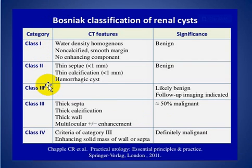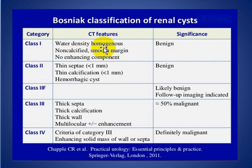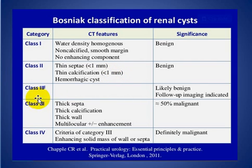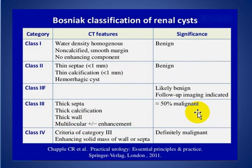To summarize by classification: Type 1 and Type 2 are benign — ignore. Type 1 features water density, homogeneous, no calcification, smooth margin. Type 2 has few thin septa less than 1 mm, thin calcification, or hemorrhagic cyst. Type 2F looks benign but some cases need follow-up. Type 3 has thick septa, thick calcification, thick wall, multiloculated wall enhancement, and carries 50% risk of malignancy. Type 4 is malignant and should be excised.